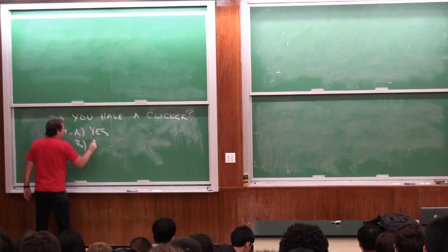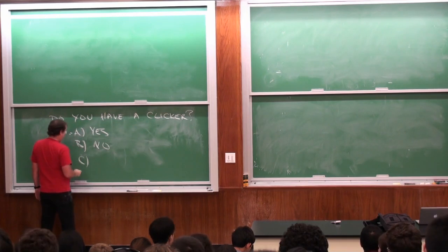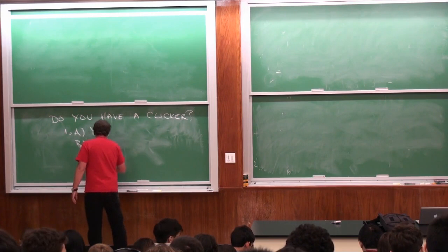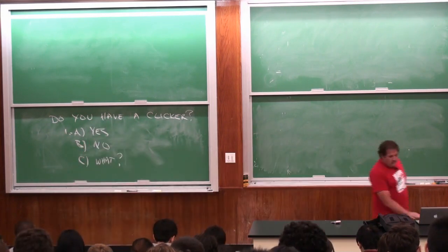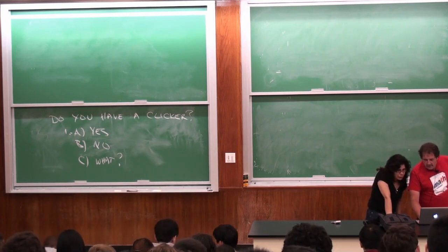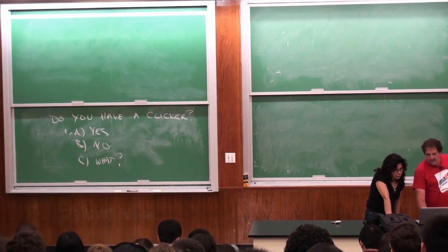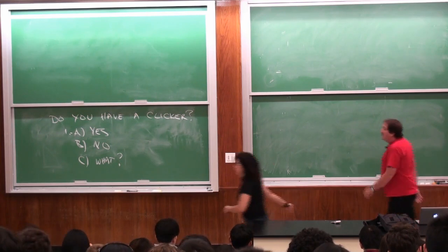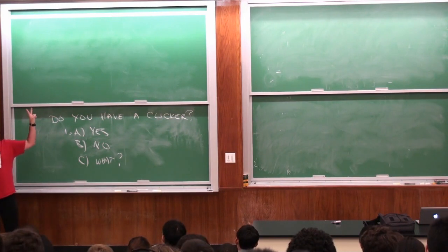A is also the same as one. It should be 41. You can still do it. So the way the clickers are graded: you get one point for answering and one point if you answer correctly.